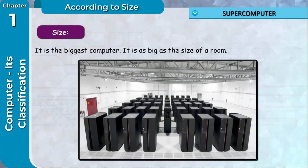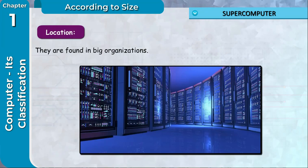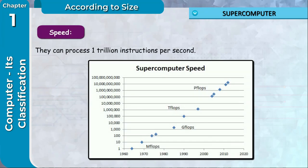Size: It is the biggest computer. It is as big as the size of a room. Location: They are found in big organizations. Speed: They can process 1 trillion instructions per second.